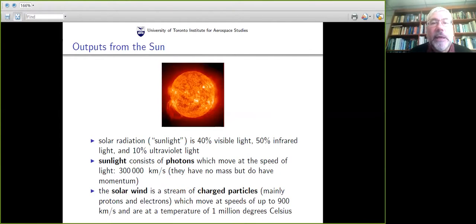Let's talk about the sun and some of the things that come out of it. The most obvious one is sunlight or solar radiation. It's made up of visible light for the most part, 40 percent infrared light we can't see, and some ultraviolet light. Sunlight is actually made up of little tiny particles called photons, which move very fast at the speed of light, 300,000 kilometers per second. Photons have no mass, but they do have momentum, which is particularly interesting when we start looking at solar sails.